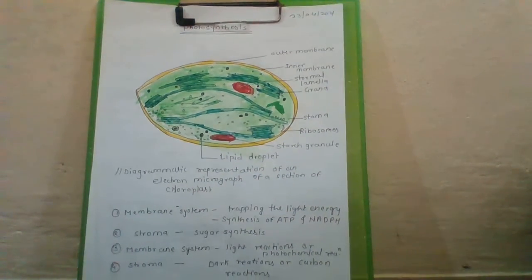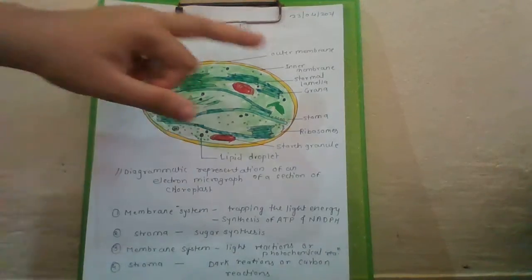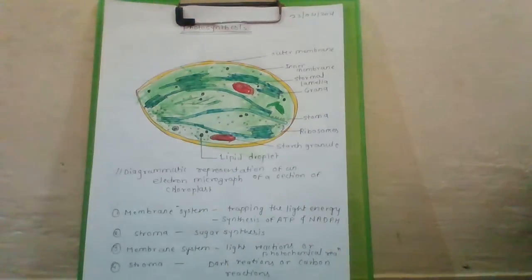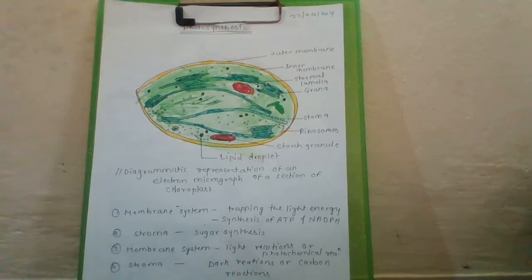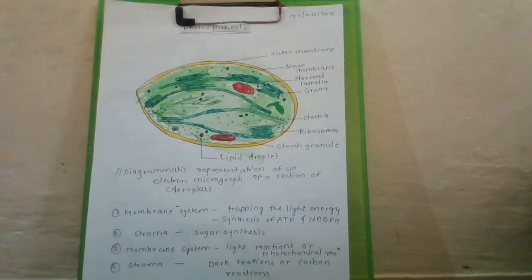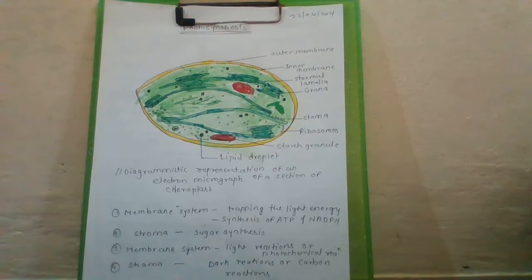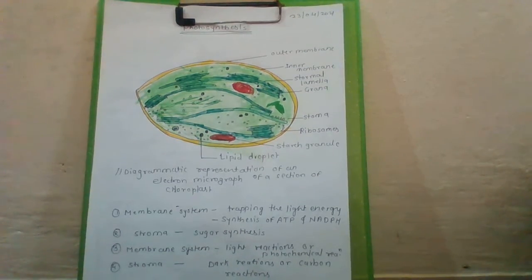There is a clear division of labor within the chloroplast. The membrane system is responsible for trapping the light energy and for the synthesis of ATP and NADPH. The enzymatic reactions in the stroma carry out synthesis of sugar, which in turn forms starch. The trapping of light energy and conversion to ATP and NADPH are directly related to light.